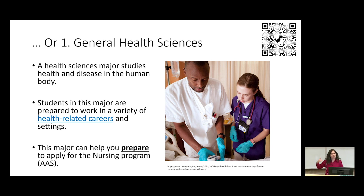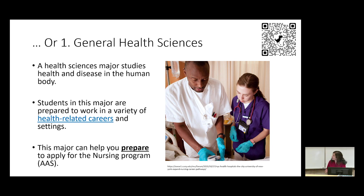If you are not interested in any of the four specific concentrations, or you don't know what you want to pursue yet, you can follow the general health sciences pathway. This is sort of the miscellaneous category — it covers everything outside of the four specialized concentrations. While it offers flexibility if you don't know what you want to do, you still need to be careful not to spread too thin, and you still need a plan.